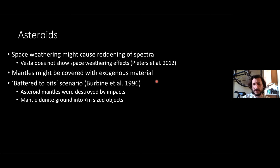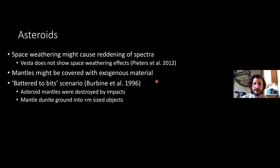There's also the 'battered to bits' scenario, first suggested by Bergen et al. 1996, which suggests that asteroid mantles were systematically destroyed by impacts in the first few million years of solar system history. Mantles were destroyed and the dunites composing them were ground into smaller-than-meter-sized objects that then fell into the sun or got accreted onto larger planets like Earth and Mars.